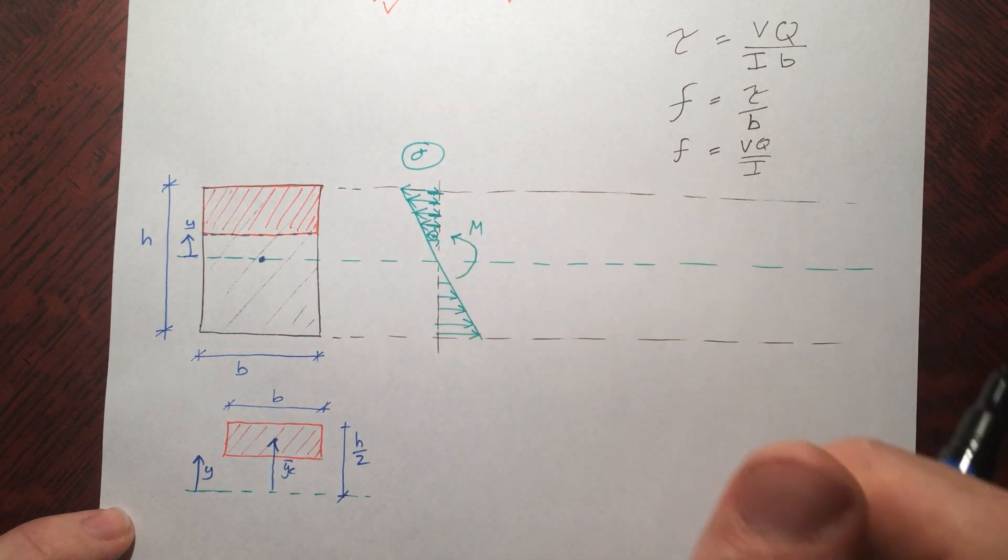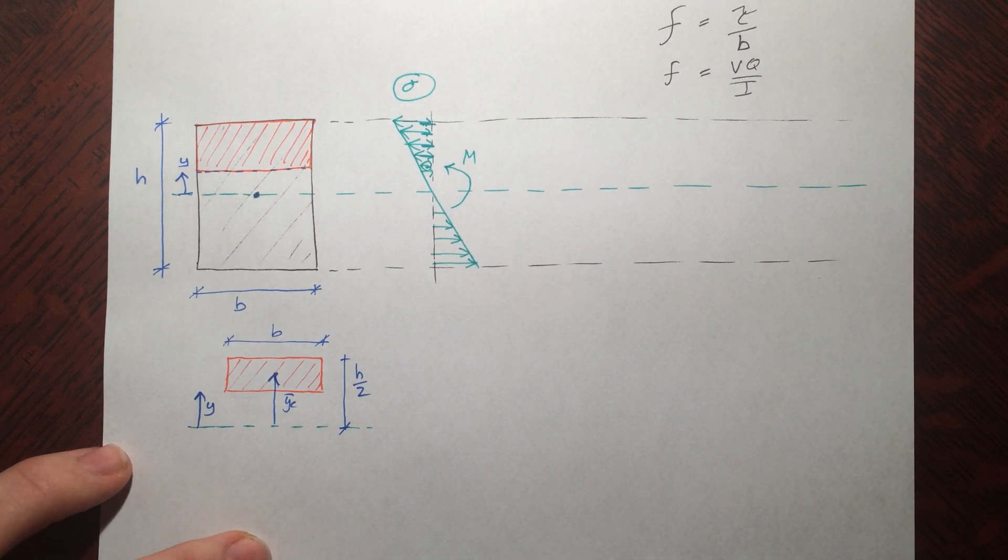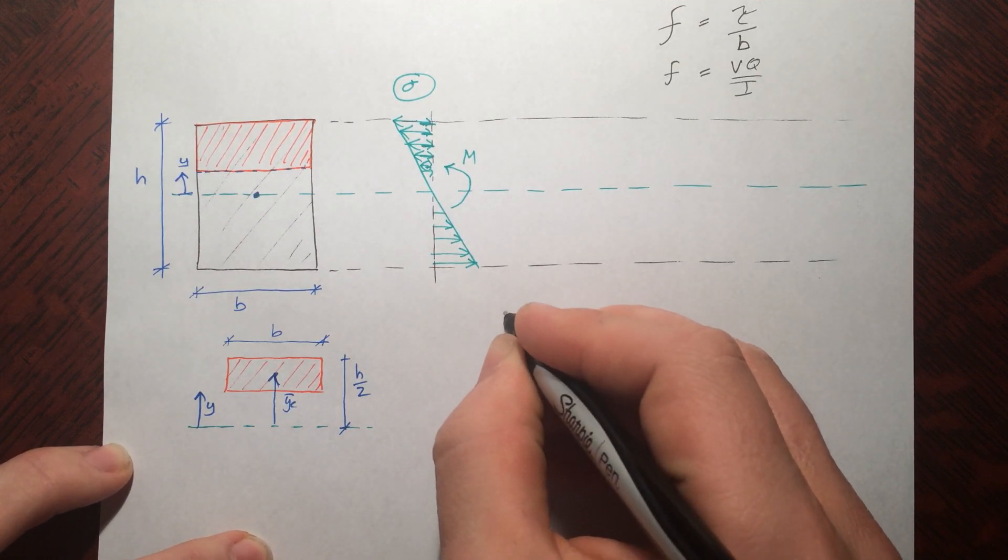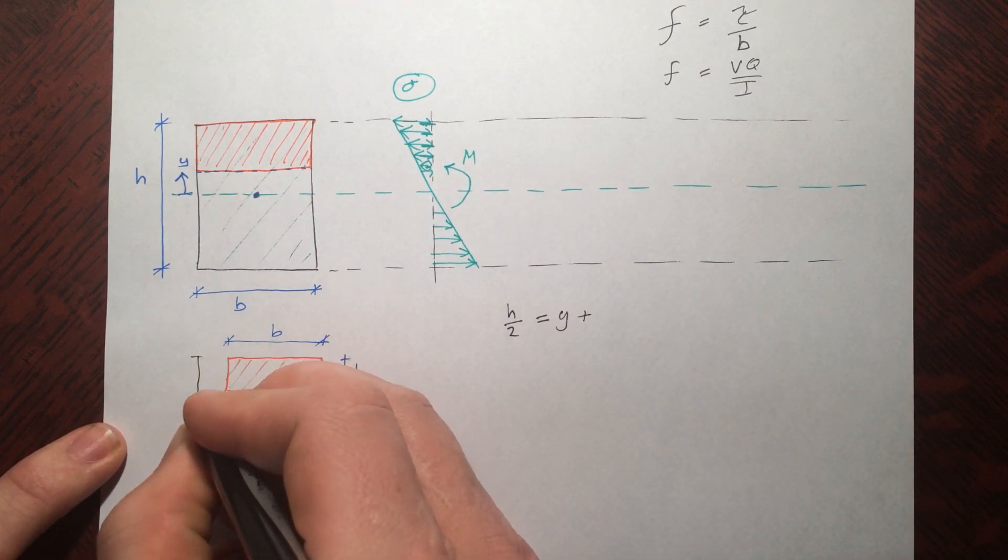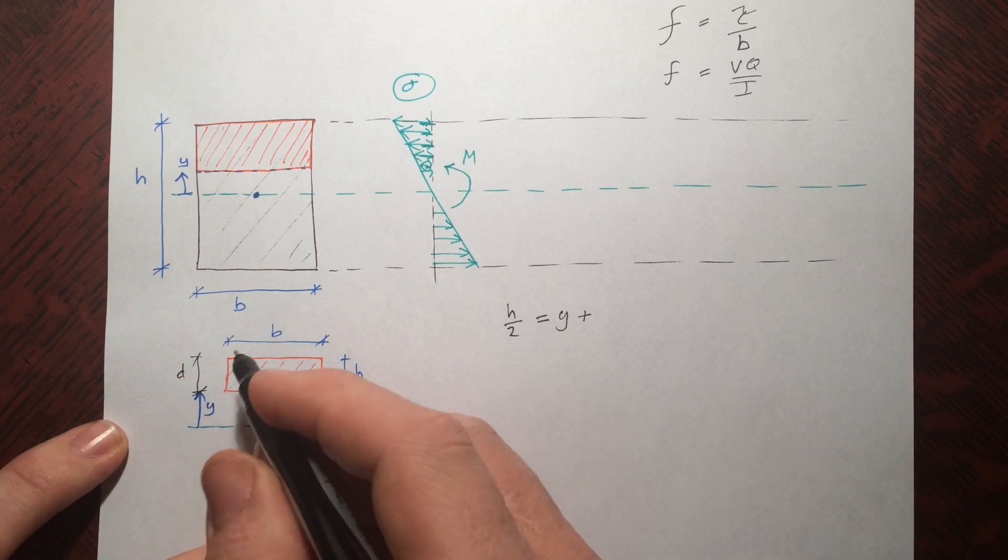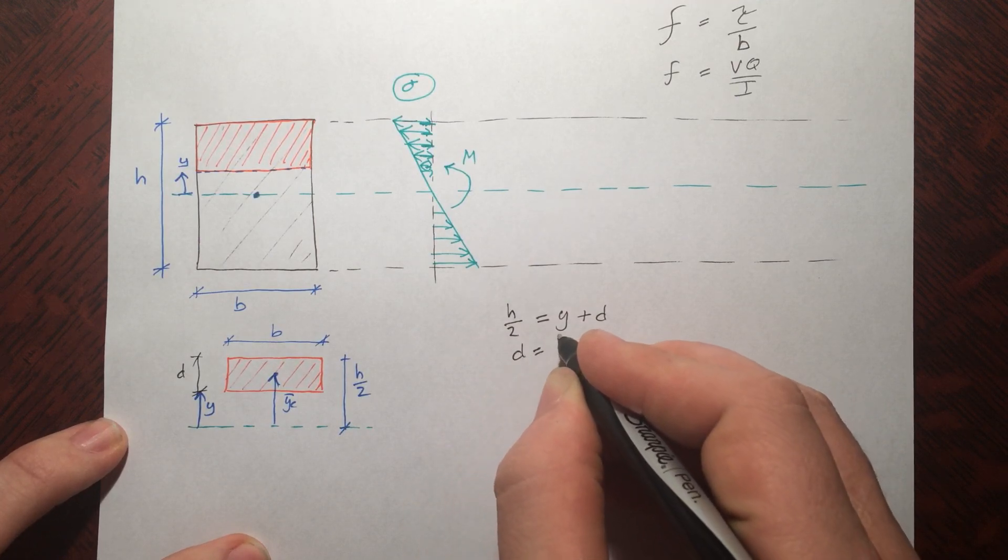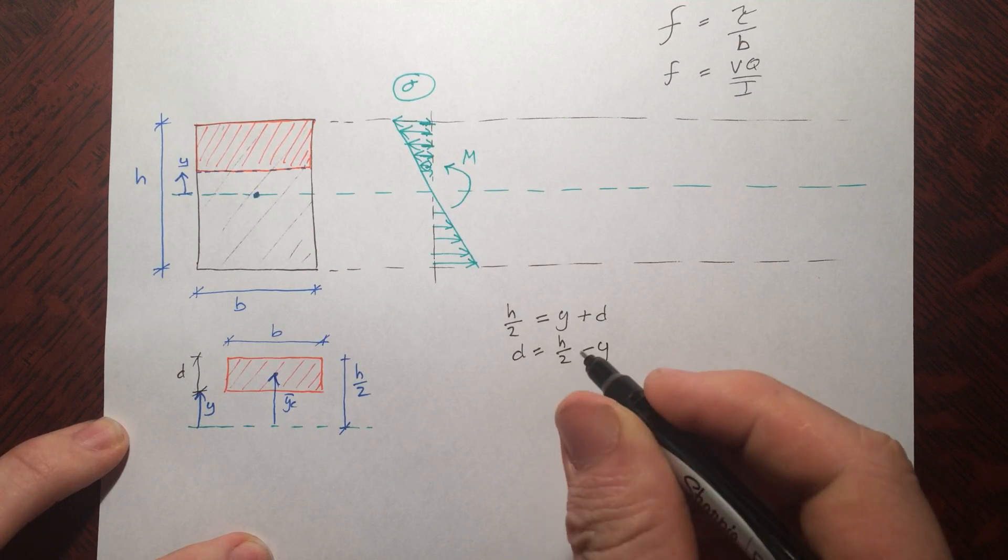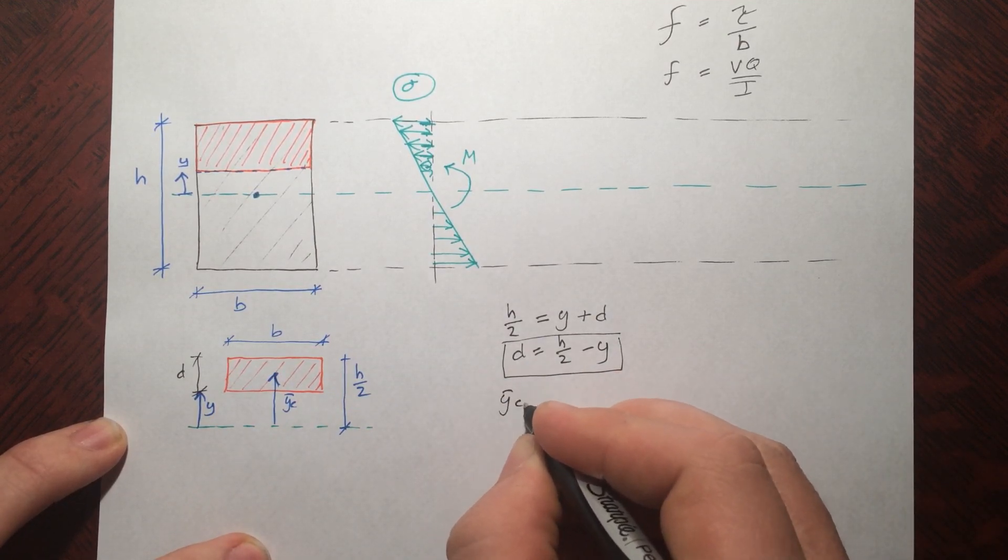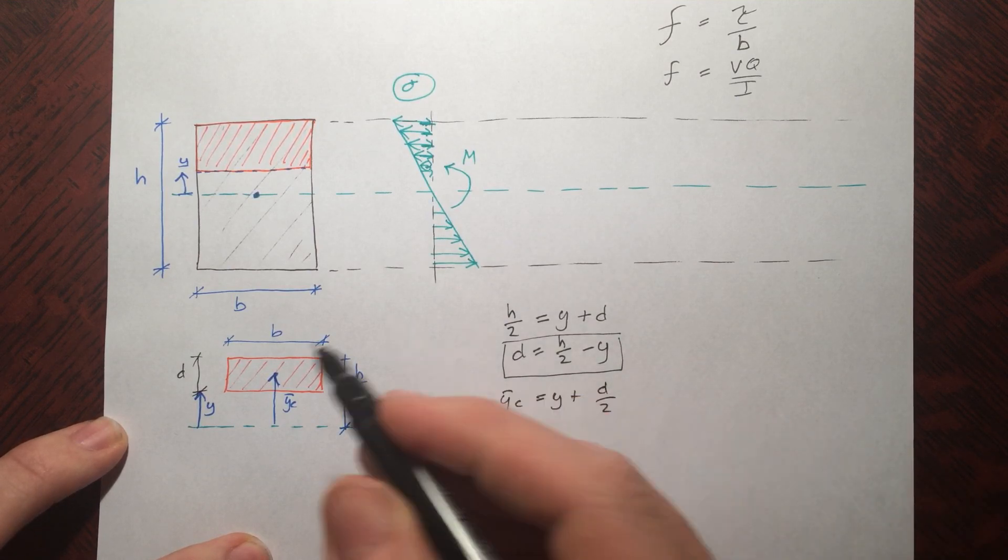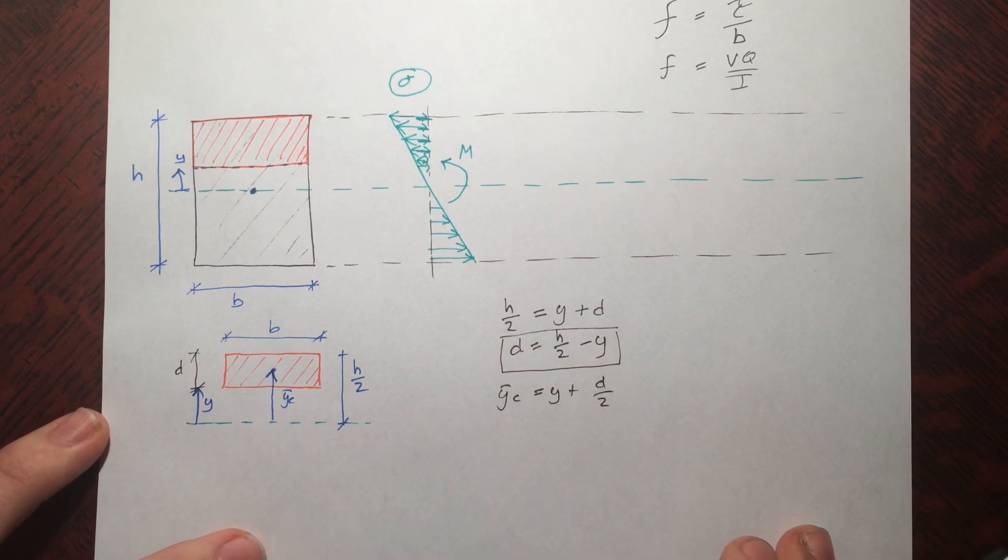So let's go ahead and develop q as a function of y. So we can say that h over 2 is equal to y plus this arbitrary distance here. We'll call it d for our case. That's basically the height of the piece that's left over. So y plus d. And then, of course, we can say d is equal to h over 2 minus y. So this is the height of this piece right here. And the centroid is equal to y plus d by 2. So this distance here plus half this distance, because the centroid of a square piece is always right at the middle. So it's going to be half of a d.